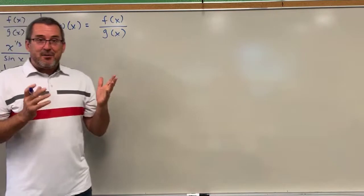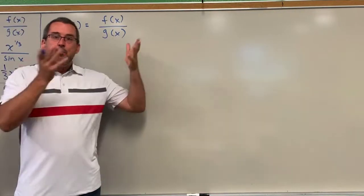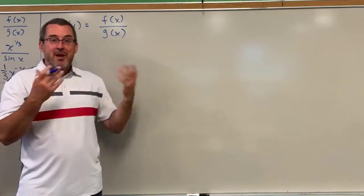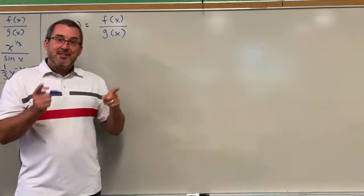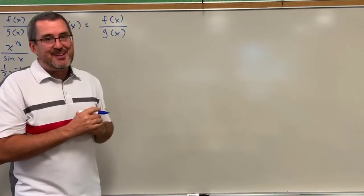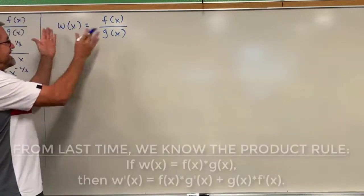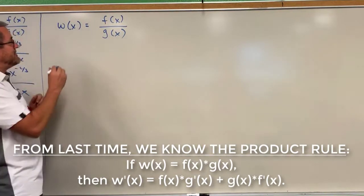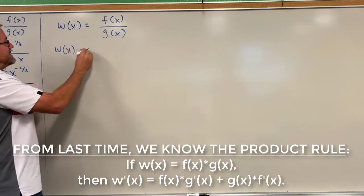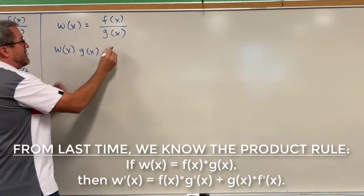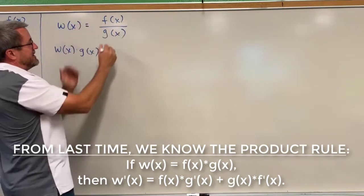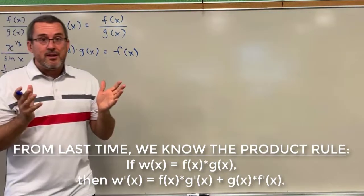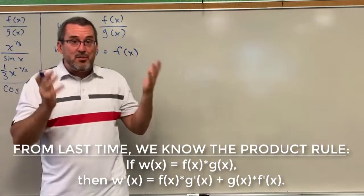A good mathematical principle is to go back to things you already know and build from there. The way I'm going to prove the quotient rule is to go back to something you already know called the product rule. Take this equation and multiply both sides by g of x. So we have w of x times g of x equals f of x. Keep in mind, our goal is to find the derivative of w — to find w prime. So to do that, I'm going to take the derivative of both sides of this equation.